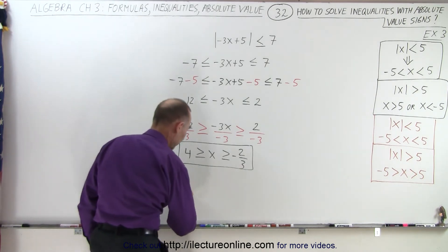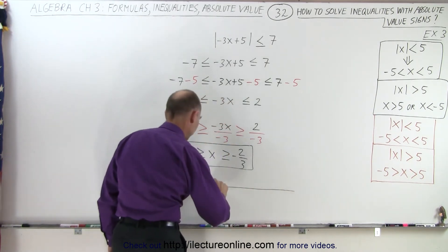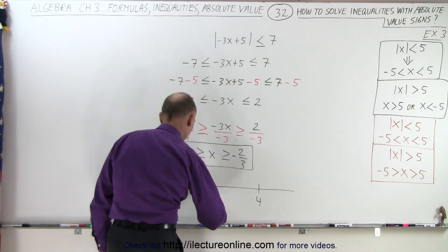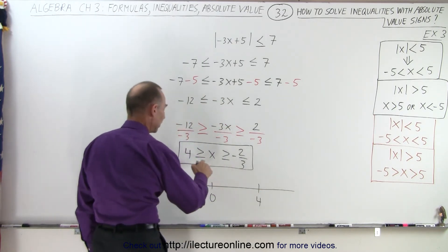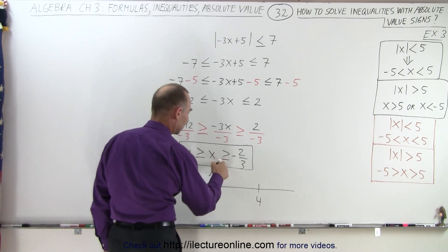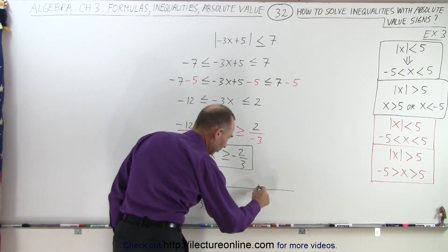Graphically, it will look as follows. Here's 0. Here's 4. Here's negative 2 thirds. Notice it does include the values x equals 4 and x equals negative 2 thirds, so we'll put a solid circle there.